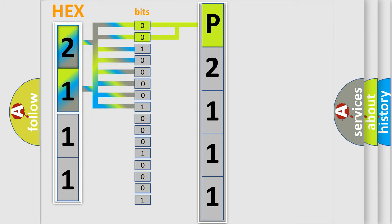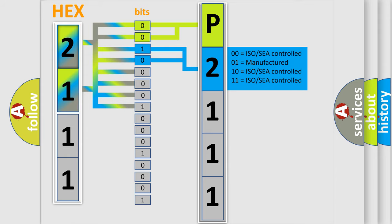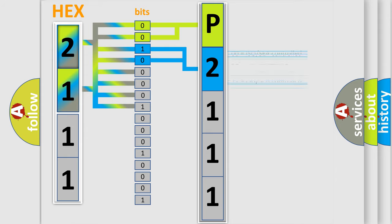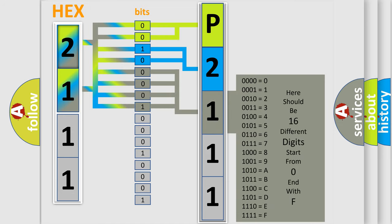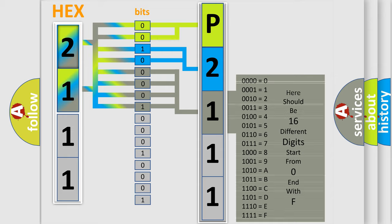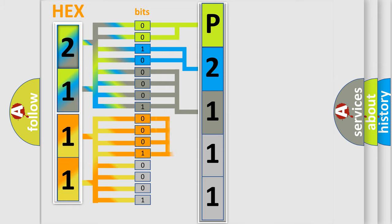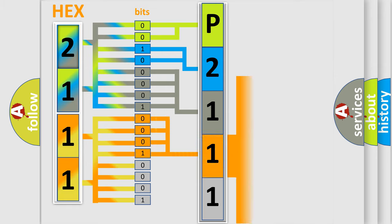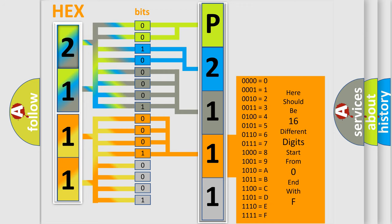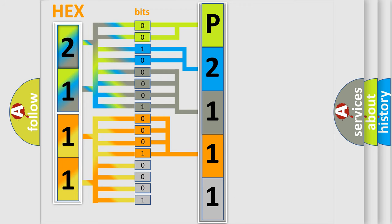The next two bits determine the second character. The last bits of the first byte define the third character of the code. The second byte is composed of a combination of eight bits. The first four bits determine the fourth character of the code, and the combination of the last four bits defines the fifth character. A single byte conceals 256 possible combinations.